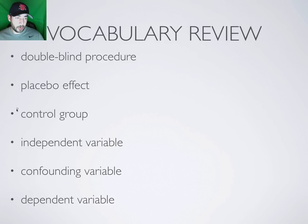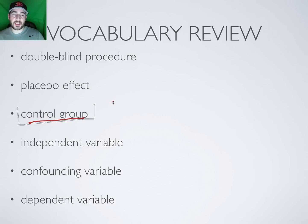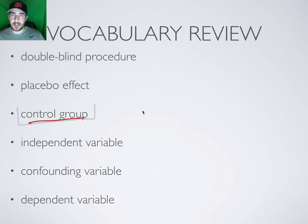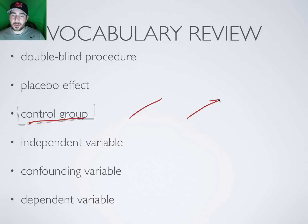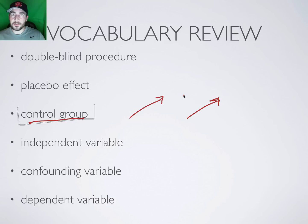A control group is a group that doesn't receive any variable or procedure — you simply watch them. For example, if you want to test whether chocolate milk before games makes sixth graders better at baseball, the control group just does what they normally do. If both groups improve equally, maybe it's not the chocolate milk — maybe it's just that they're getting older and stronger. The control group ensures we're not attributing improvement to a variable that doesn't actually cause it.